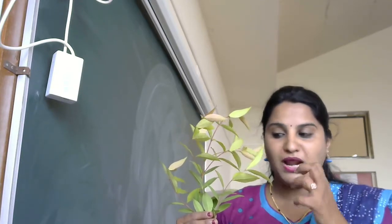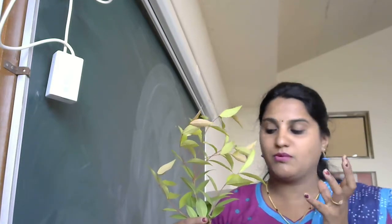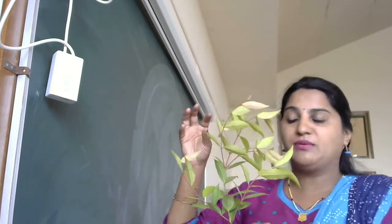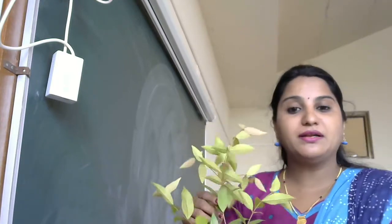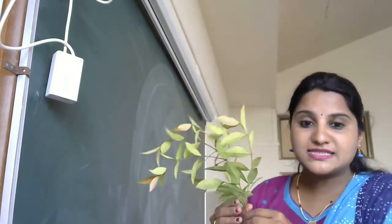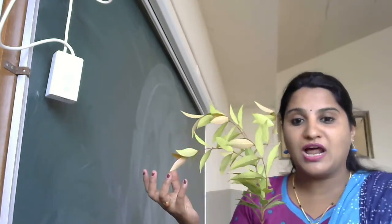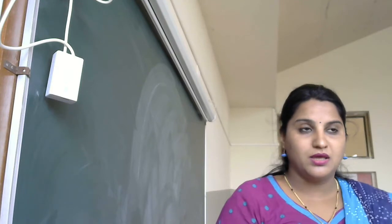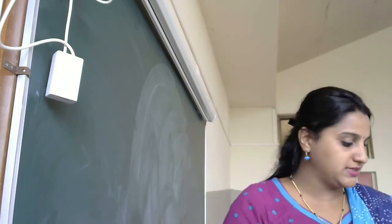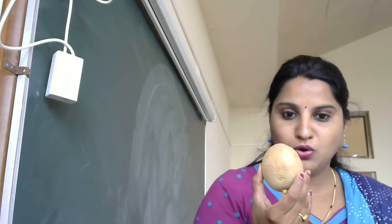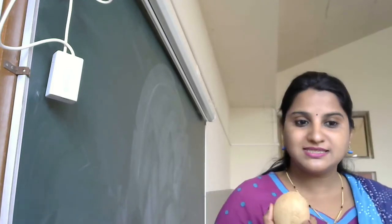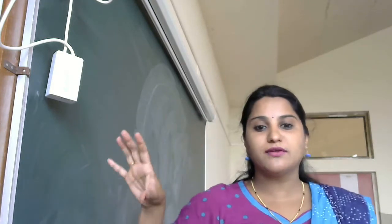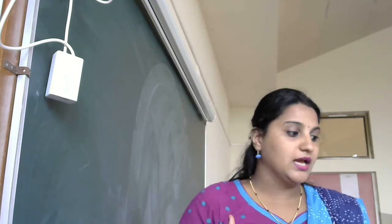After the plant takes as much food as it needs, the extra food is stored in different parts of the plant — it might be in the roots, in the stem, in the fruit, or in the flower. For example, potato is a stem that we eat, and ginger is also a stem. These are examples of extra food stored in different parts of the plant.